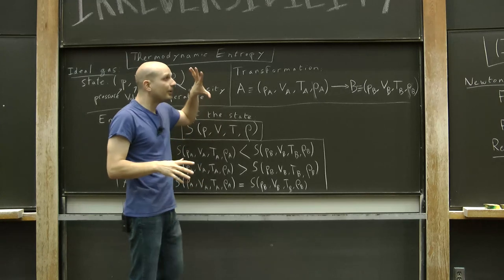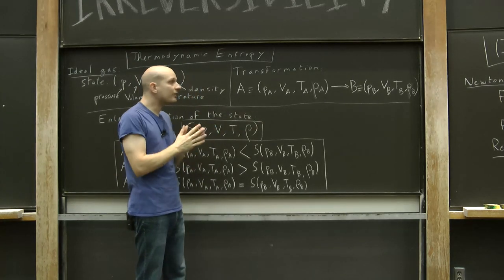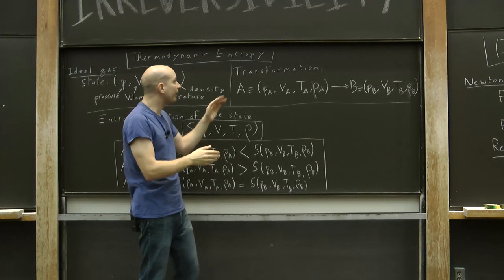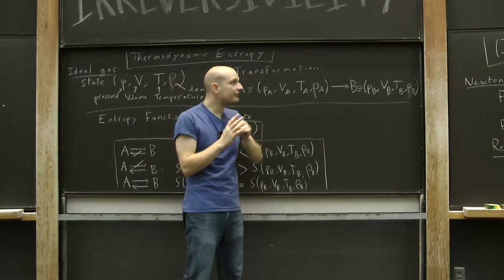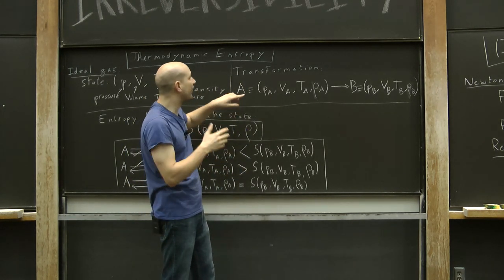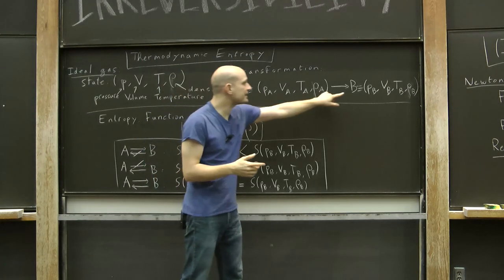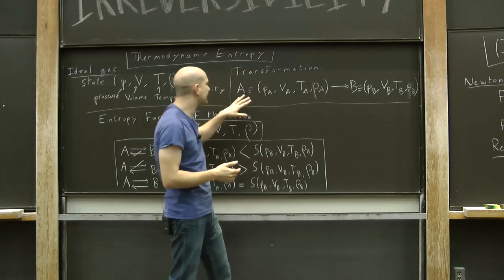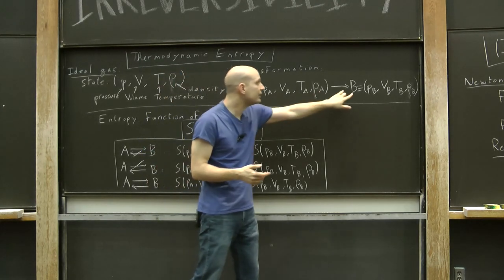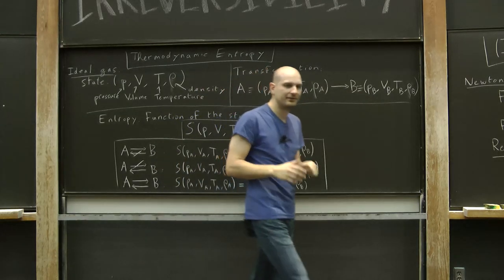Now, because of the discussion that we've just seen, we know that there are certain states that can be attained from other states, reversibly or not. So for instance, there may be a pair of states A and B such that it is possible to get from A to B but not back from B to A.